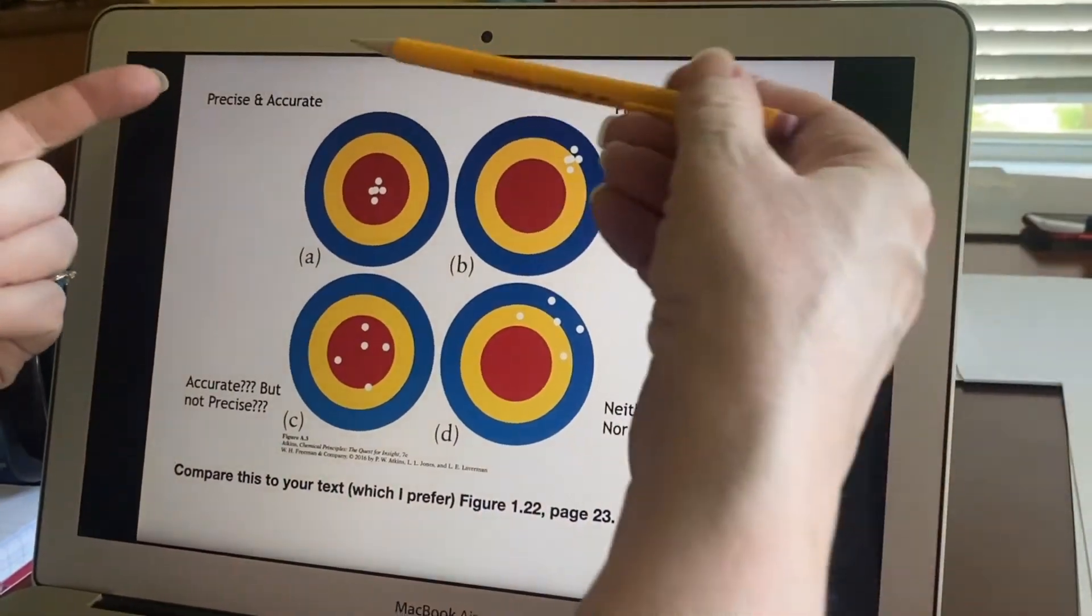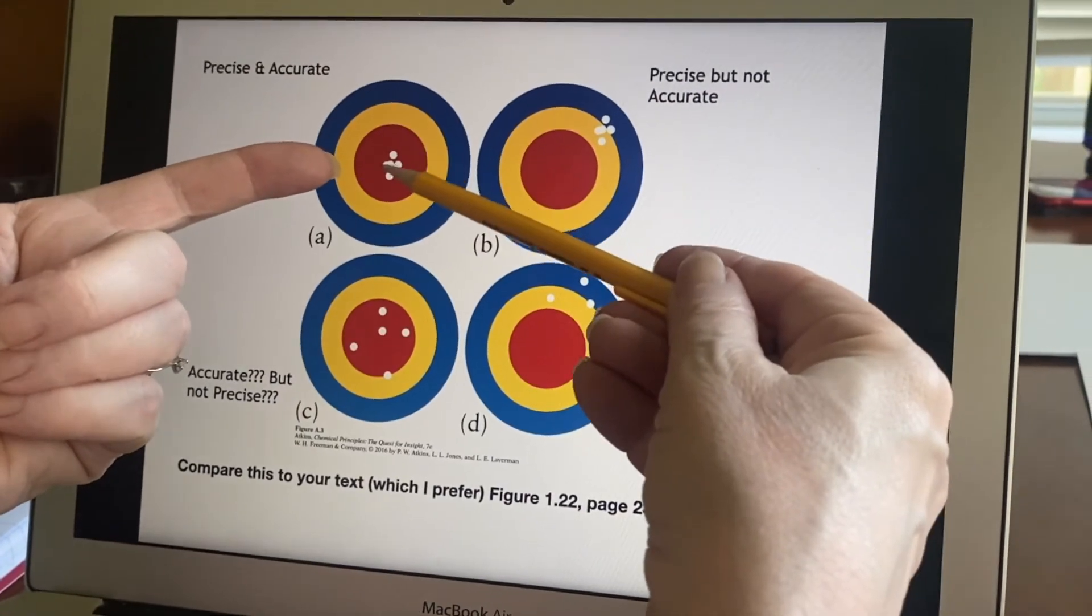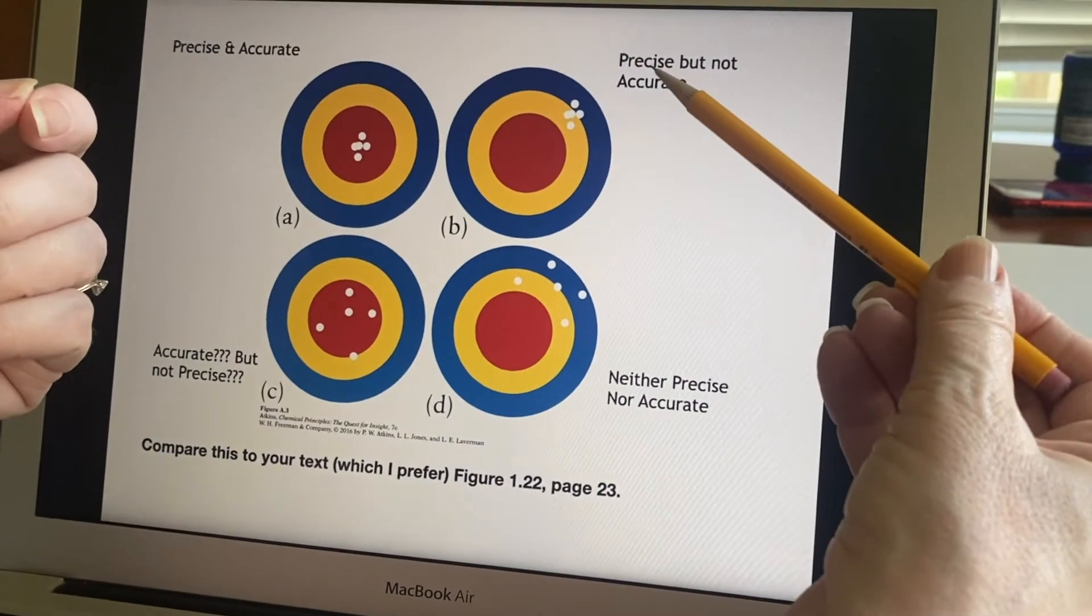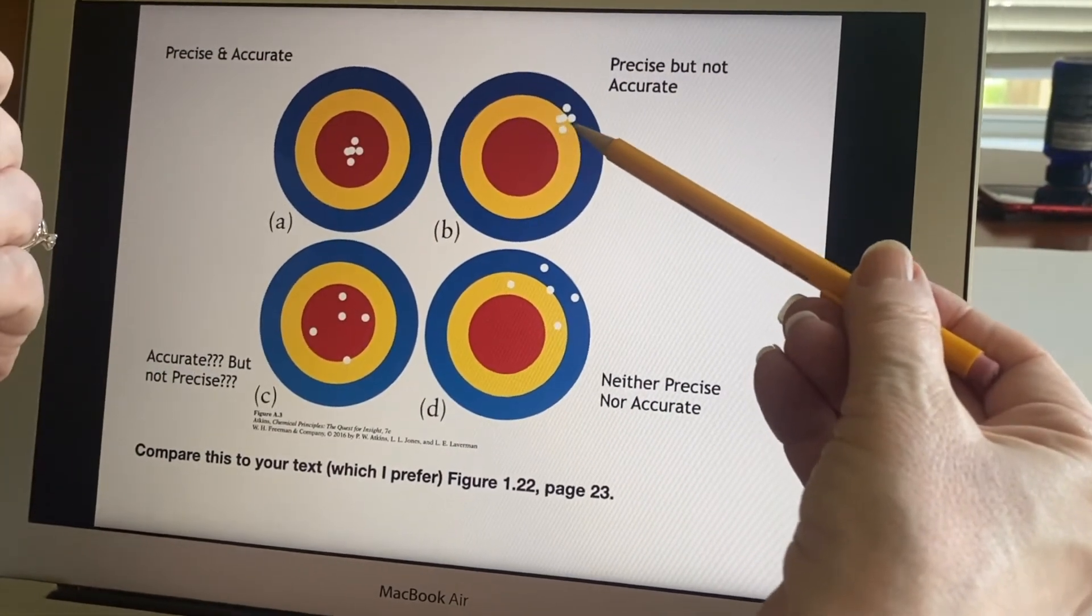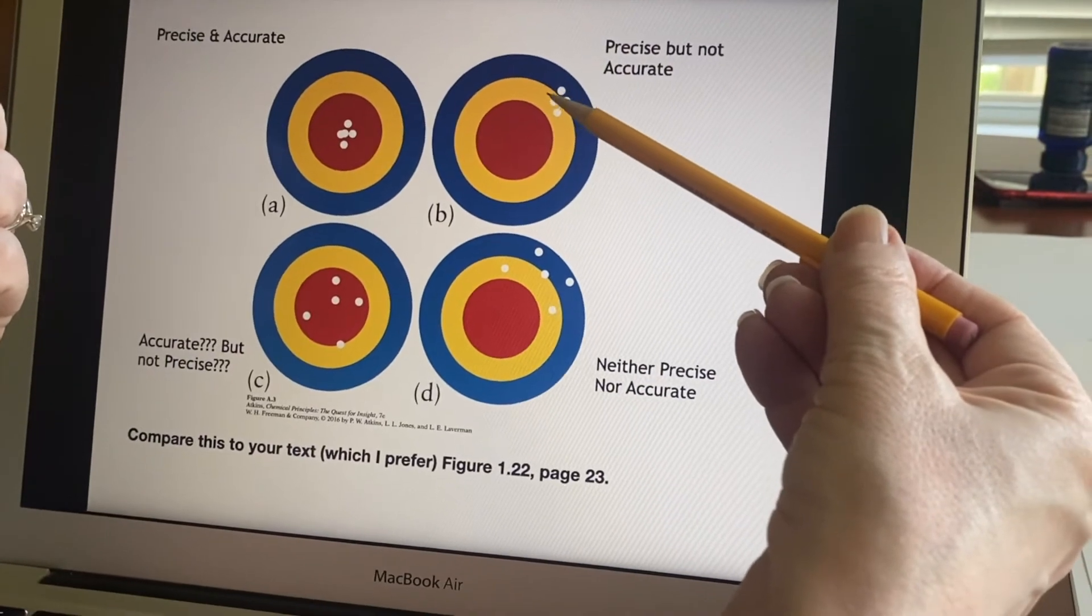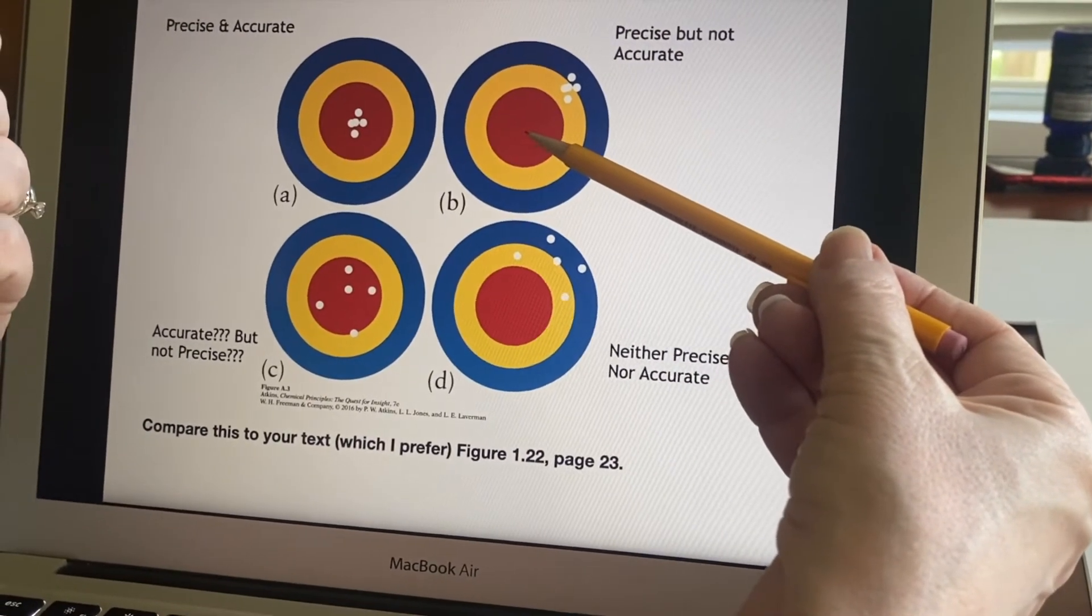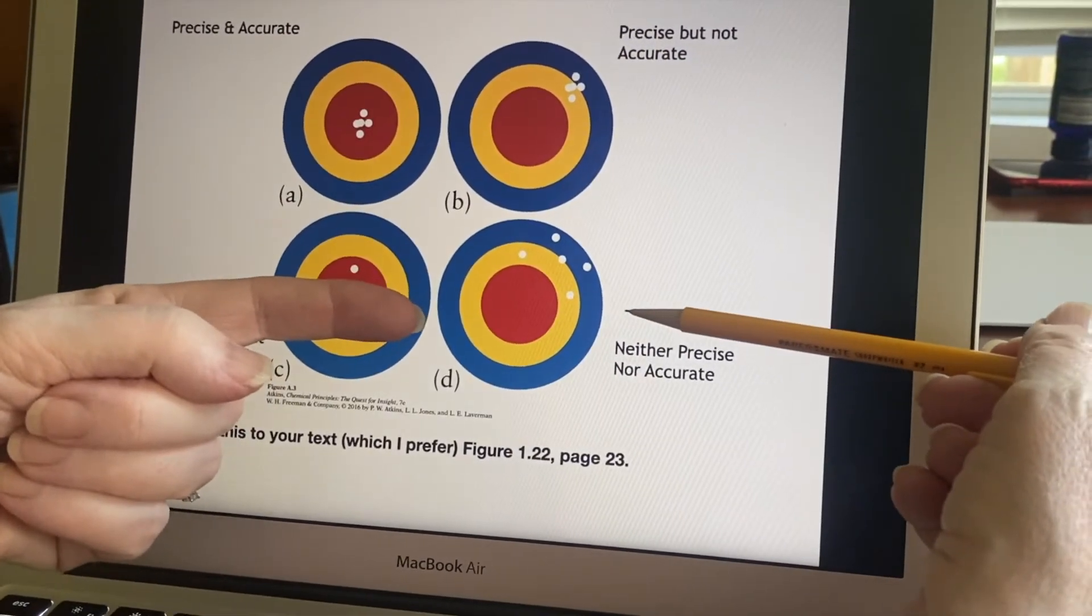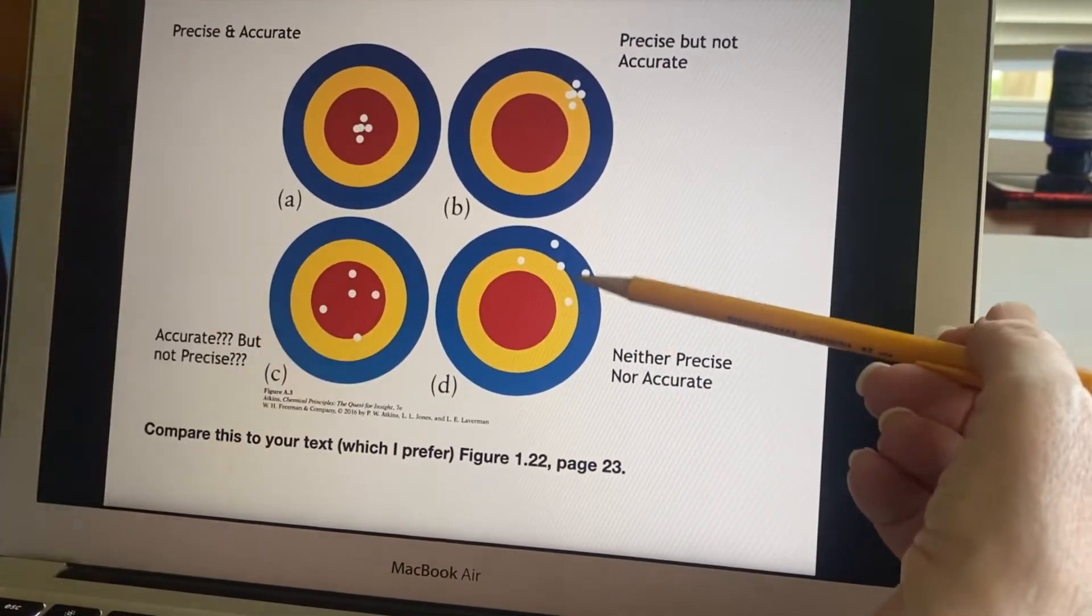So if you look, you see precise and accurate. Oh, yes, this person did very well at centering everything at hitting this target. Over here, precise, but not accurate. Well, they did a nice job of getting all their shots the same, but they didn't actually hit the center. Precise, but not accurate. Neither accurate nor precise. Nope, they're not anywhere near the center, and they're all spread out. Oh, my.